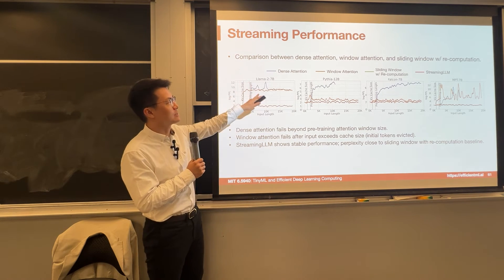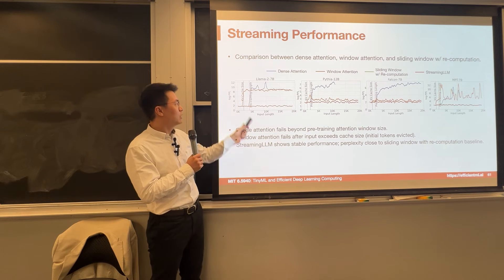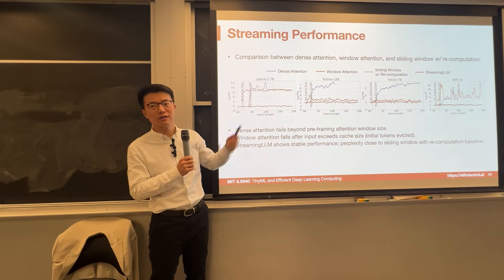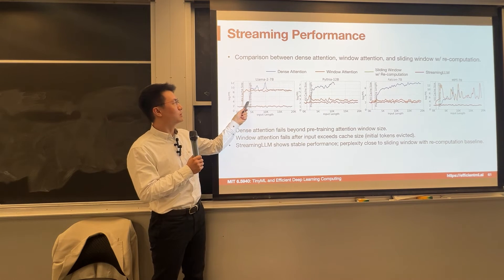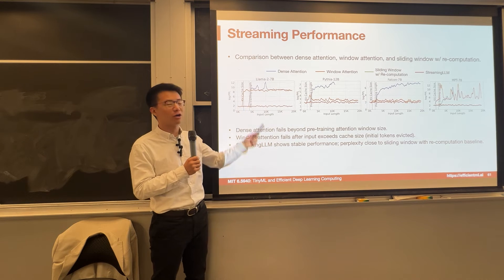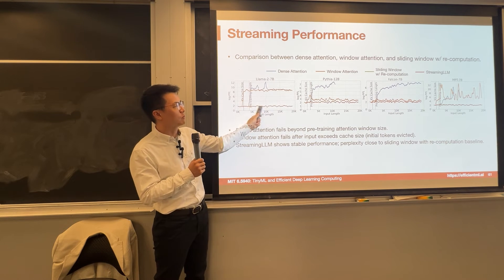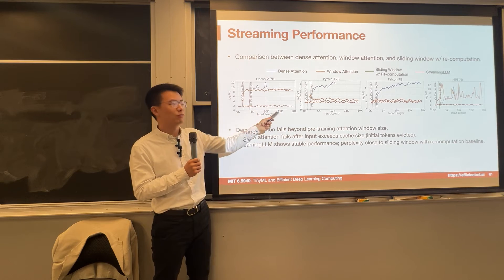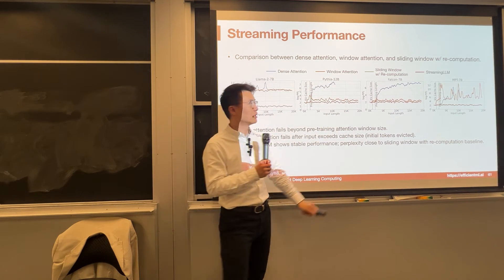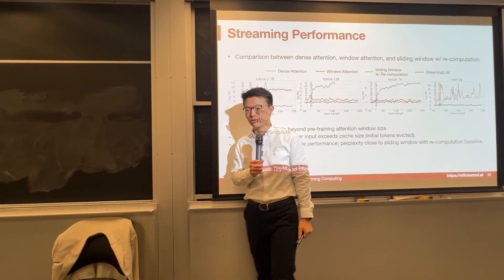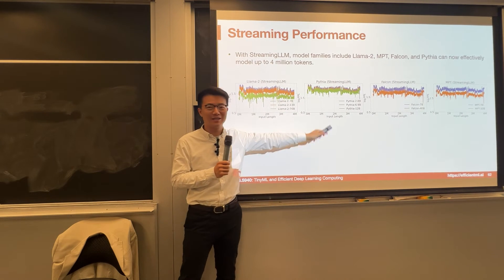Now we compare dense attention, window attention, sliding window attention, recomputation, versus streaming LLM. Previously, window attention breaks when the sequence length is greater than the KV cache size since the first sink token is evicted. Dense attention performance breaks once the length is longer than the pre-trained window size. Sliding window with recomputation versus streaming LLM — they can both maintain low perplexity and pretty much overlap. We tested all the way up to 4 million tokens and it didn't stop working.